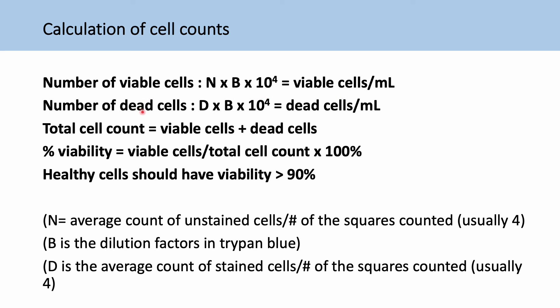Then the number of dead cells is the same again, but just the blue, dyed blue cells to give your dead cells. Then your total cell count is viable cells plus dead cells. So all the cells basically that you've counted.